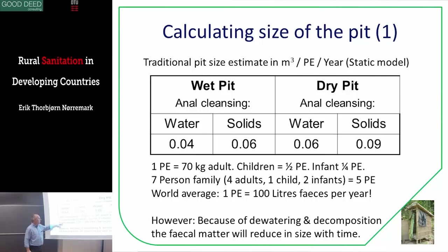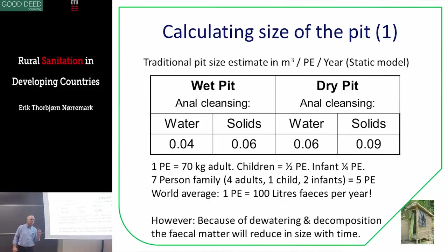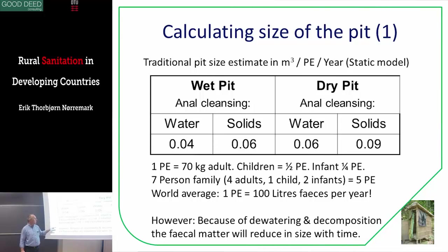WHO have made a big report, and they found that the average person in the world produces 100 liters of feces per year. I'll be using these numbers on the next slide. The key point is that the static model does not properly take into account the de-watering and decomposition of fecal matter over time — it does, but only on a short time scale.